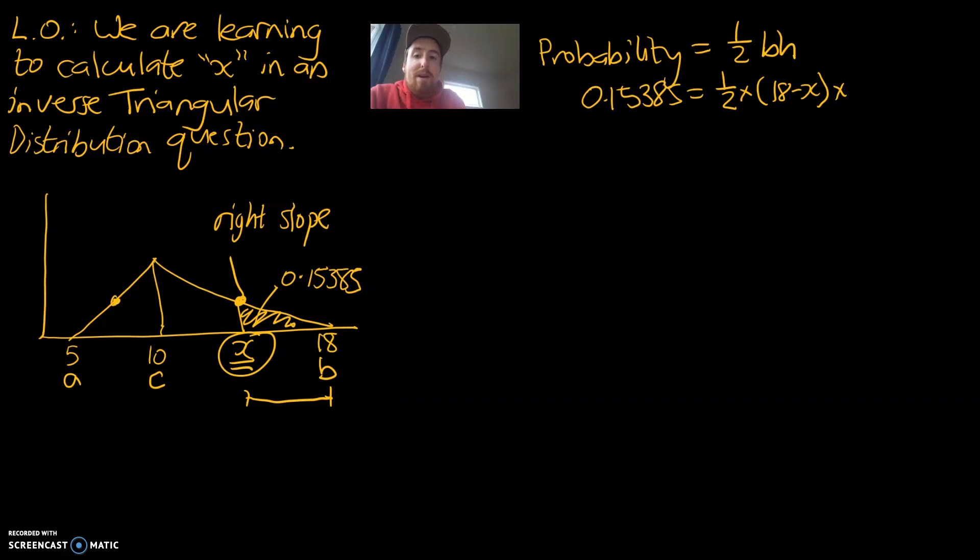We're going to be using the right slope formula. But if you have a triangle with a left slope, please make sure you're using the left slope formula. Because your answer will be wrong if you're using the wrong formula. And our formula is 2 times b minus x, divided by b minus a and b minus c.